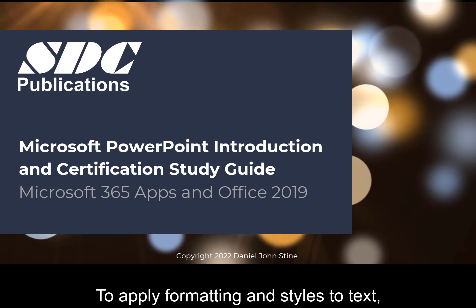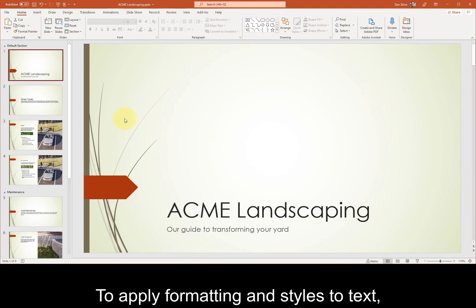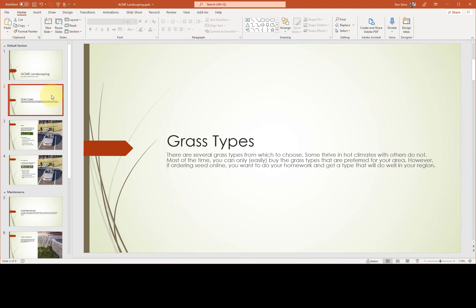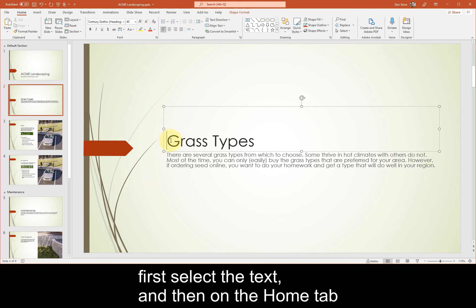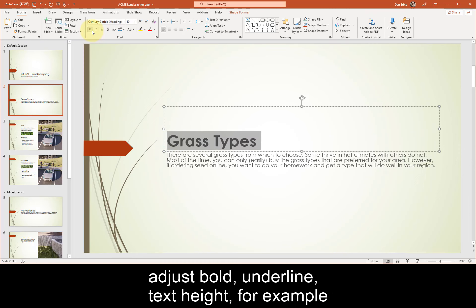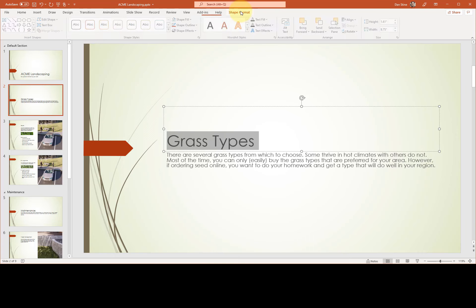To apply formatting and styles to text, first select the text, and then on the Home tab, adjust Bold, Underline, Text Height, for example.